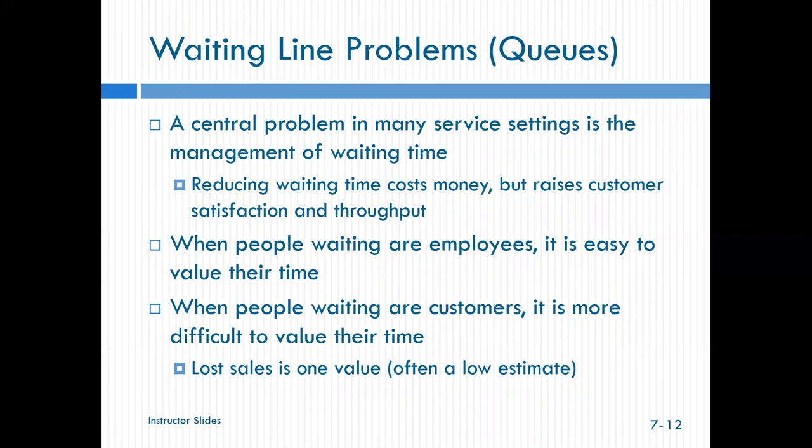When we talk about waiting lines and queues, we really are looking at the arrivals of our customers and the average time it takes us to serve the customer. So a central problem in service settings is how we manage waiting time. Reducing waiting time costs money, but we can raise customer satisfaction and throughput. When people waiting are employees, we can value their time because we know how much we're paying them per hour. When people waiting are customers, it's more difficult to value their time. Lost sales is a difficult thing to analyze. Now, I've seen some statistics on folks that have like 1-800 numbers where you call into a purchase and they can in that system get the data that says when customers wait this long, here's their average purchase. And when they wait longer, what is their average purchase? And so they are able to quantify what that value is of losing sales because people have to wait.